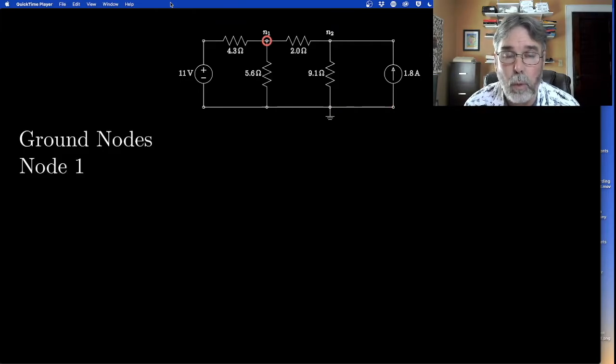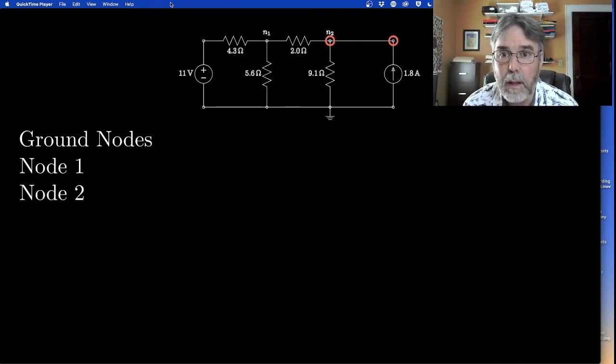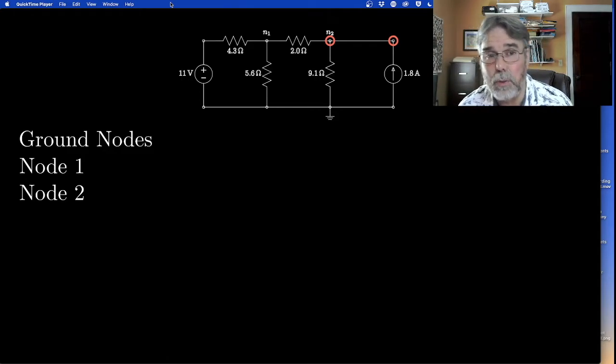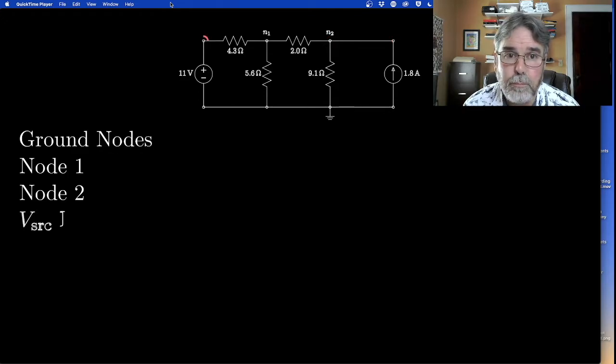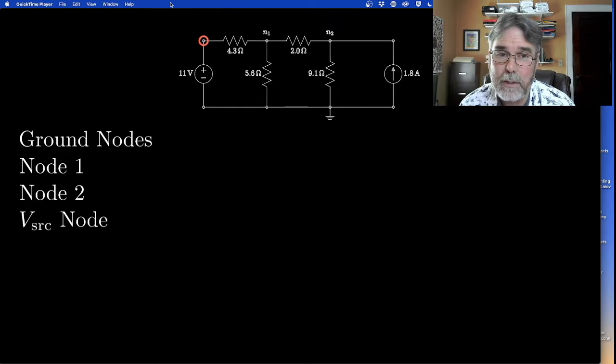Then we've got node one, which is labeled N1 there. We've got node two. And I've actually drawn circles around two nodes, what look like two nodes there. But again, those two nodes are not separated by any element, so mathematically they're just a single node. And finally, there's this other guy over there on the left. That's the source node. It's the node connected to the source that isn't ground. But we know it because it's connected to a fixed voltage source. We already know the voltage of that node, so it's not an unknown. We don't have to write an equation for that node.